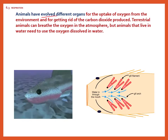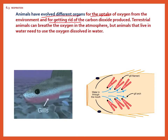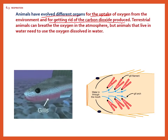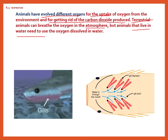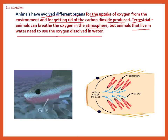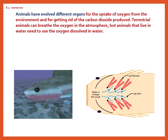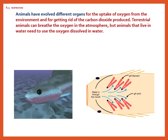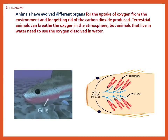Animals have evolved different organs for uptake of oxygen from the environment and for getting rid of carbon dioxide produced. Terrestrial animals can breathe the oxygen in the atmosphere, but animals that live in water need to use oxygen dissolved in water. Different animals have different organs depending on their body structure — terrestrial animals have lungs, but aquatic animals have different organs to help them respire.